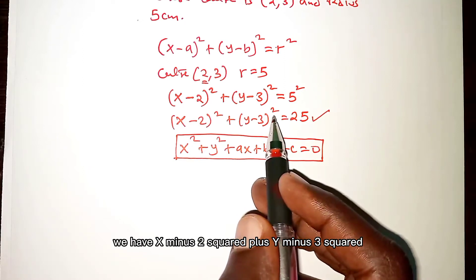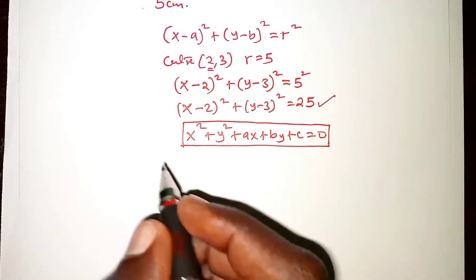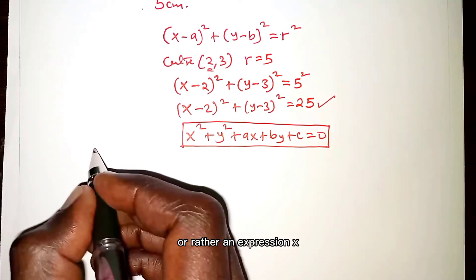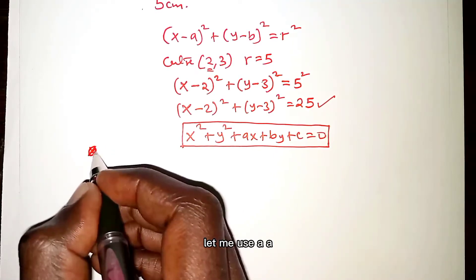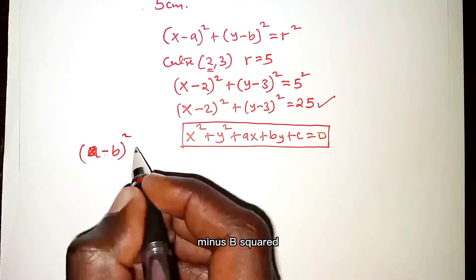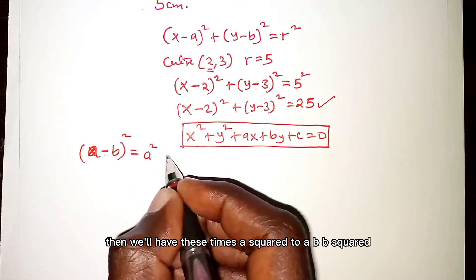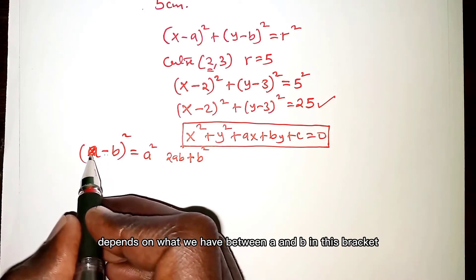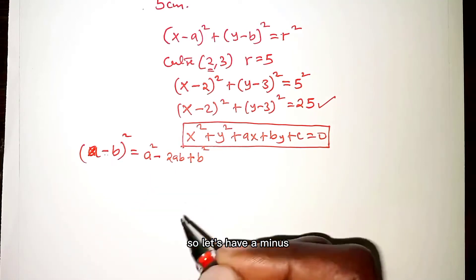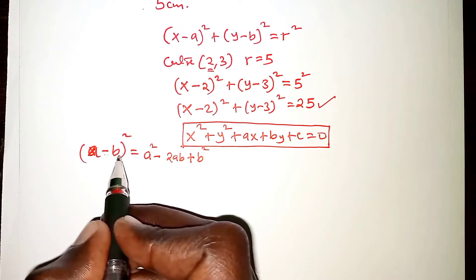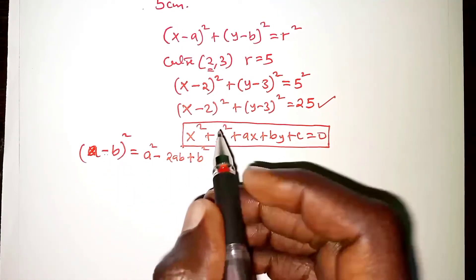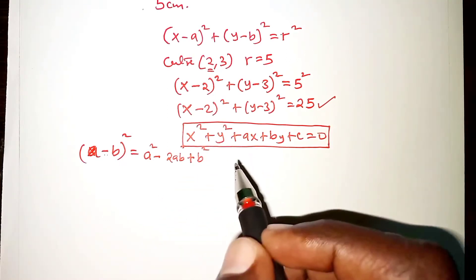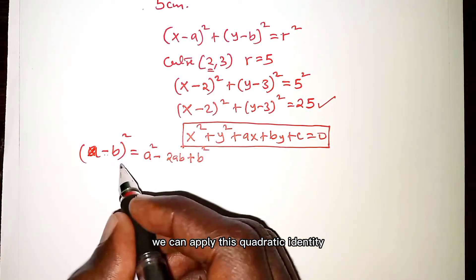If we need to reach that form, we expand the brackets on the left-hand side. We have (x minus 2) squared plus (y minus 3) squared. Recall the quadratic identity: (A minus B) squared equals A squared minus 2AB plus B squared. The sign between the terms depends on what appears between A and B in the bracket — here it is minus, so we apply this identity accordingly.